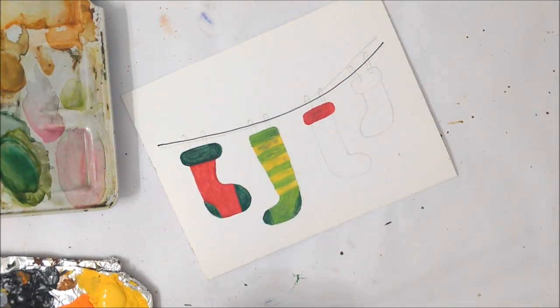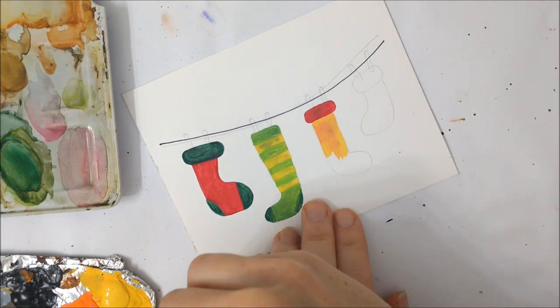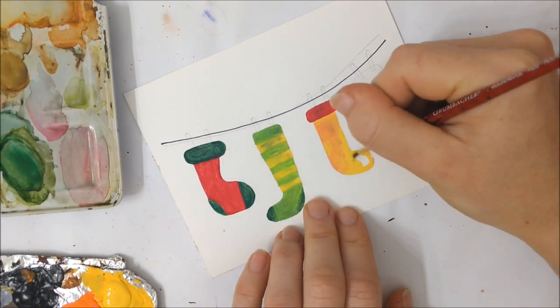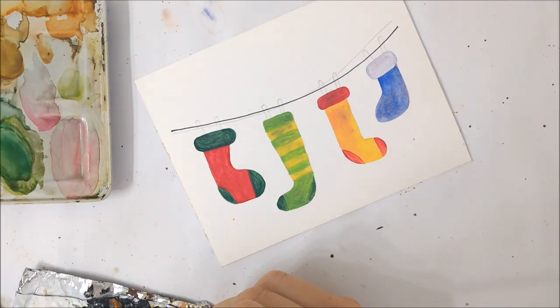But if you want to have a separate heel and toe section like all of my stockings do, then you'll have to leave those parts white so you can paint them whatever desired color you're choosing.